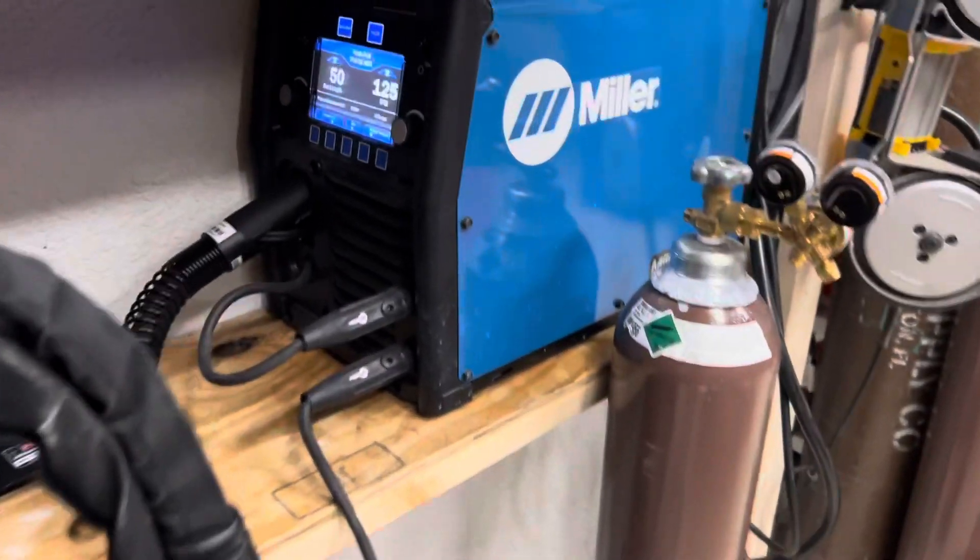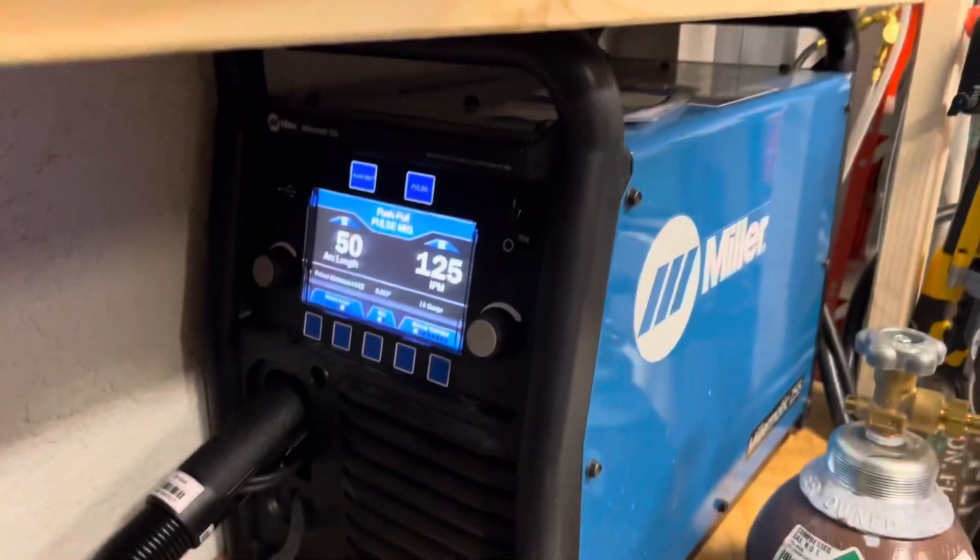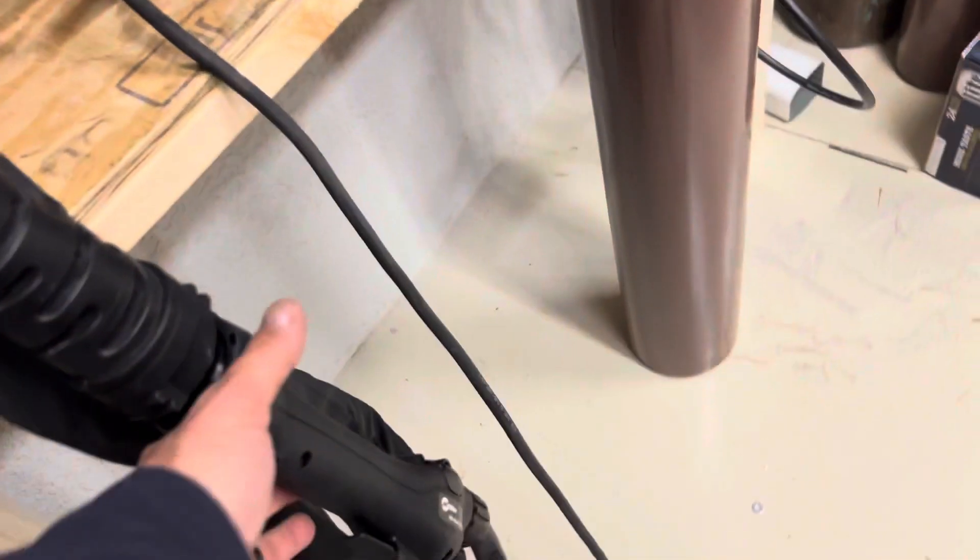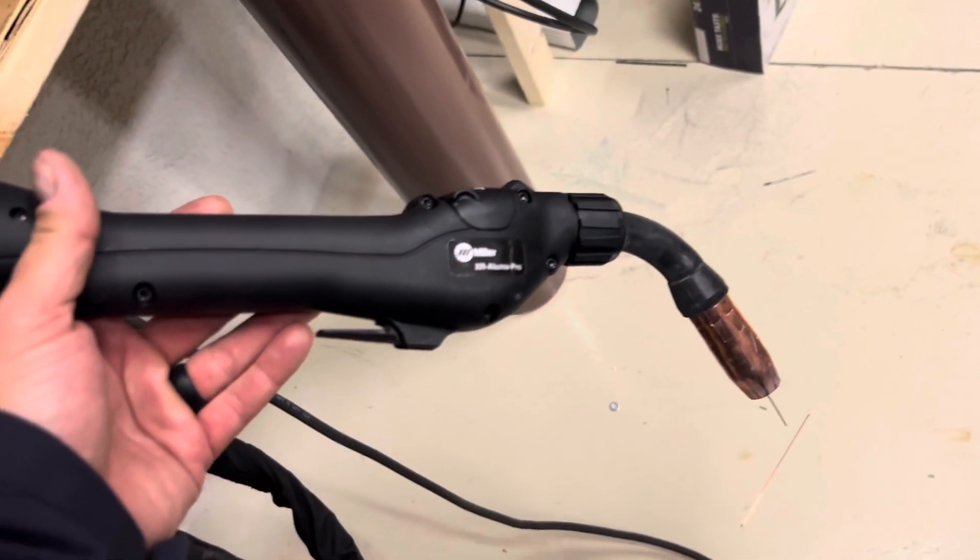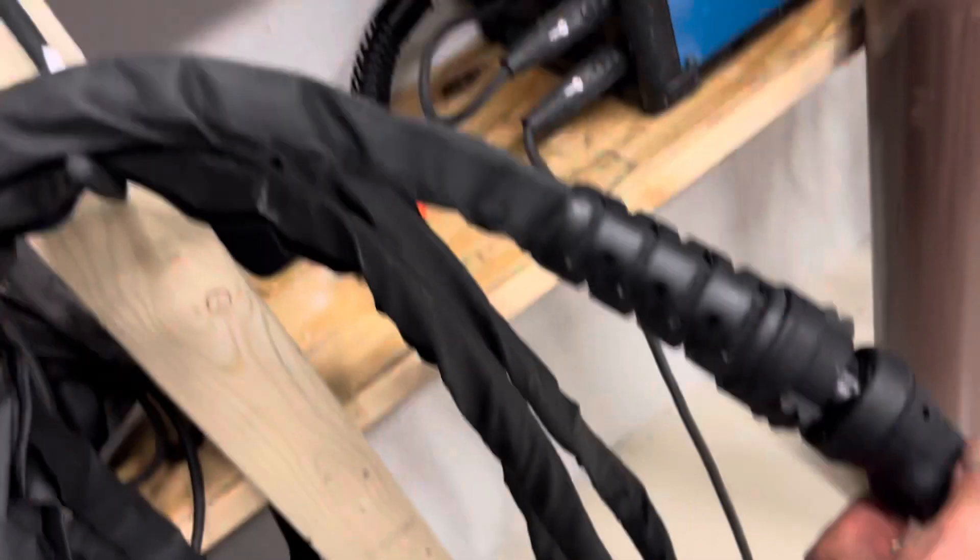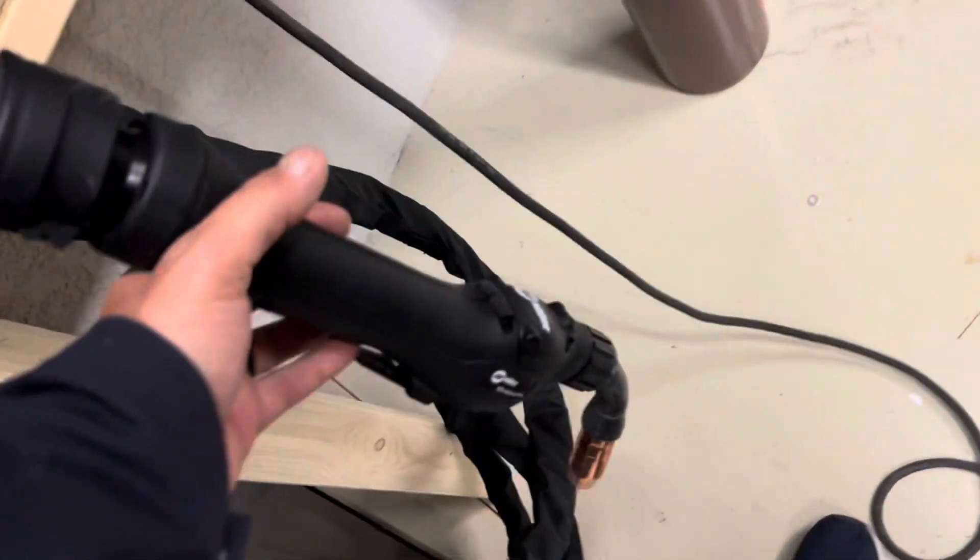So in this video, I'm going to weld some thin aluminum with my Miller 255 here. I've got a brand new Aluma Pro 25-foot push-pull gun. This gun, I just paid about $3,200 for it.